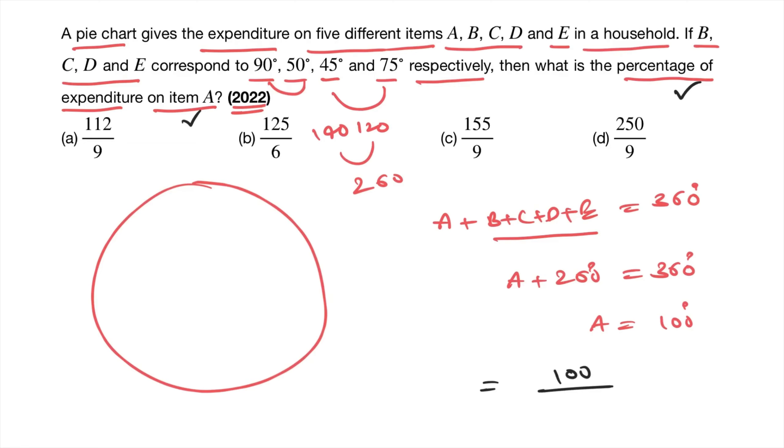100 by 360 into 100 for percentage. 100 and 100 gets cancelled out. Two 5s are 10, two 18s are 36, two 9s are 18. So 5 into 50, that is equal to 250. 250 by 9. Answer is D, 250 by 9.